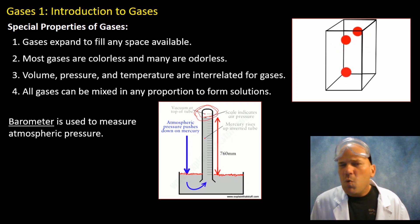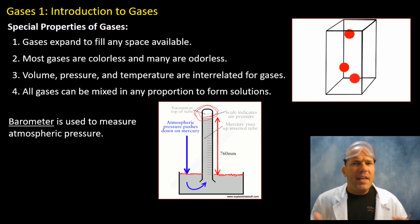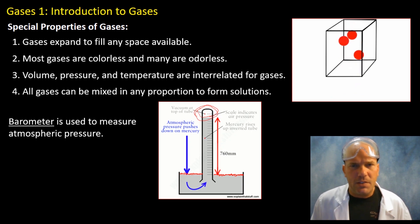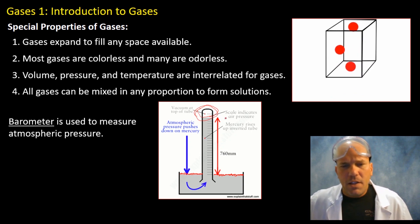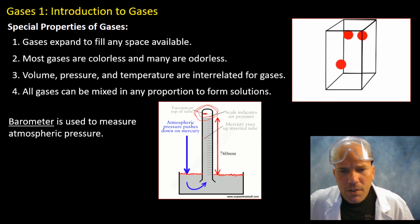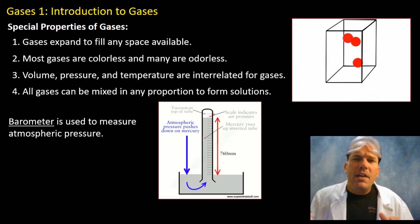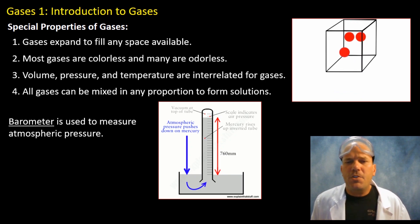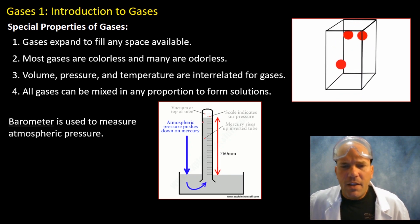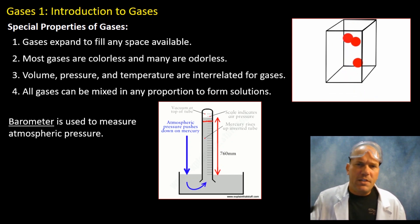Now what do you think is going to happen as the atmospheric pressure increases? Well, the level is going to increase. Likewise, if the atmospheric pressure decreases, then the column, the mercury level, will decrease.